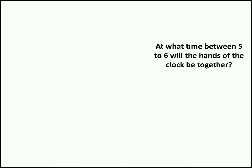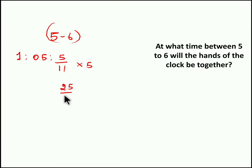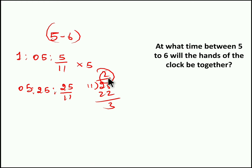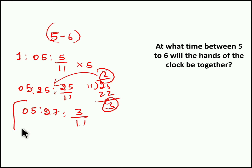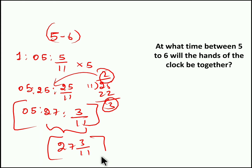First question: at what time between 5 and 6 will the hands of the clock be together? We know both needles coincide every 1 hour 5 minutes and 5/11 seconds, so we multiply by 5. Five times 5 is 25, giving 25/11 for the seconds part, and 5 times 5 is 25 minutes with 5 hours. In 25/11 we have a complete 2 minutes with remainder 3. Carrying those 2 minutes to 25 gives 27 minutes and 3/11 seconds. So at 27 3/11 minutes after 5 o'clock, both the needles will coincide.